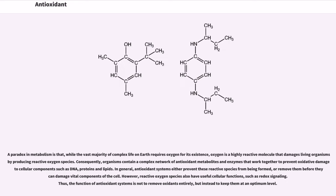A paradox in metabolism is that, while the vast majority of complex life on Earth requires oxygen for its existence, oxygen is a highly reactive molecule that damages living organisms by producing reactive oxygen species. Consequently, organisms contain a complex network of antioxidant metabolites and enzymes that work together to prevent oxidative damage to cellular components such as DNA, proteins and lipids.